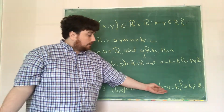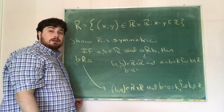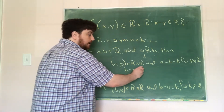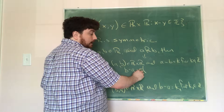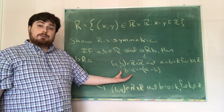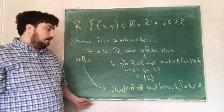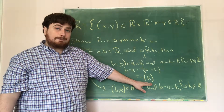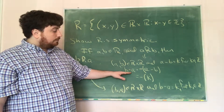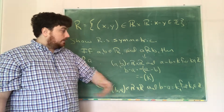If we want to show b minus a is an integer, we write: b minus a equals negative 1 times (a minus b). Distributing the negative gives us b minus a. But a minus b is just k, so b minus a equals negative k. Since k is an integer, negative k is an integer. Therefore, we have shown that b minus a is an integer if a minus b is an integer — so if a r b, then b r a.